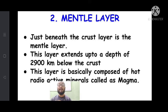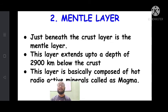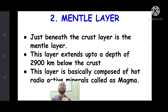The second layer of the earth is the mantle layer, which lies just beneath the crust. This layer extends up to a depth of 2,900 kilometers below the crust. It is mainly composed of hot radioactive minerals called magma. The mantle layer is in a semi-liquid, molten state — very hot, like boiling water.